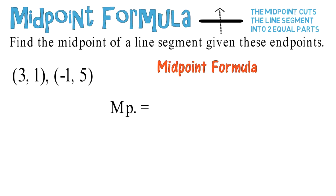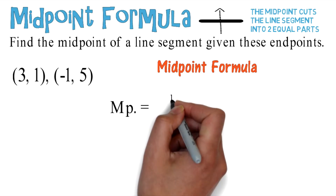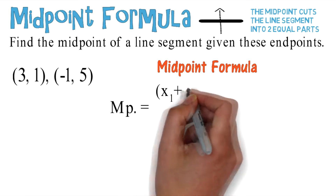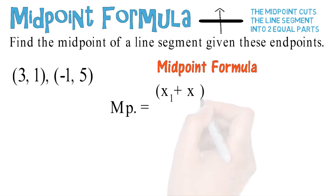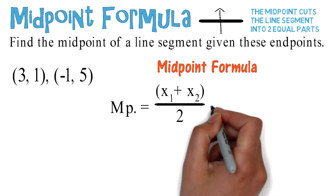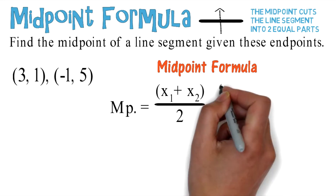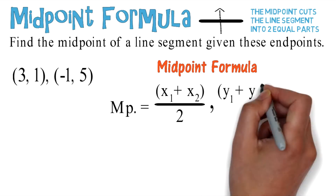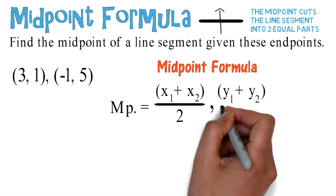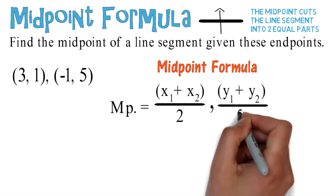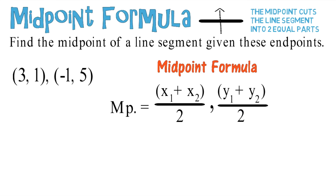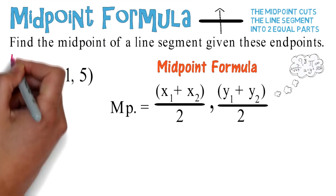Here is your midpoint formula, which should be memorized. MP, which stands for midpoint, equals (x1 + x2) divided by 2 for the first coordinate, and (y1 + y2) divided by 2 for the second coordinate. Commit this formula to memory.